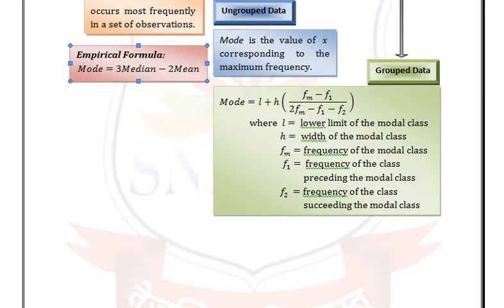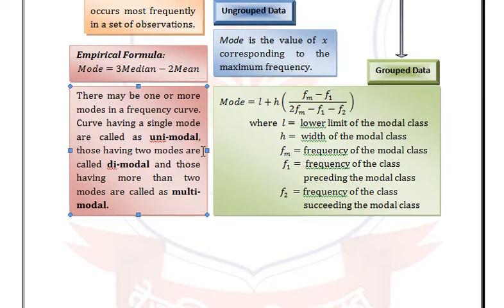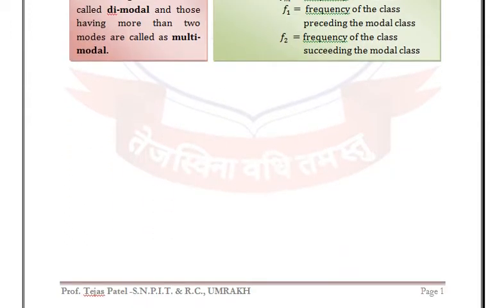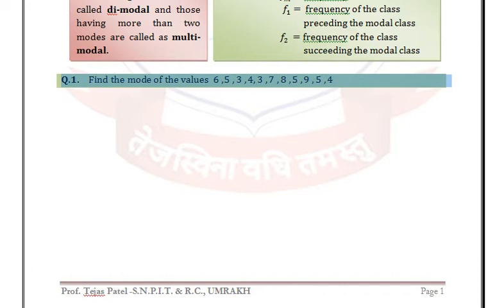Note: there may be one or more modes. In a frequency curve, distributions having a single mode are called unimodal, those having two modes are called bimodal, and those having more than two modes are called multimodal. Now let's see the examples.